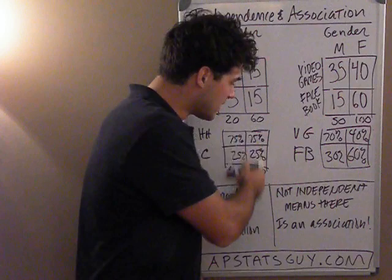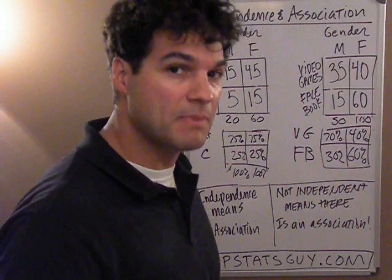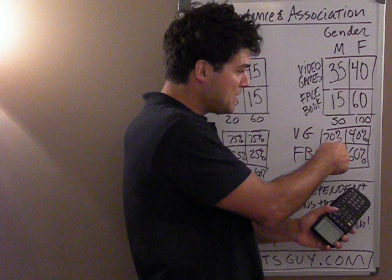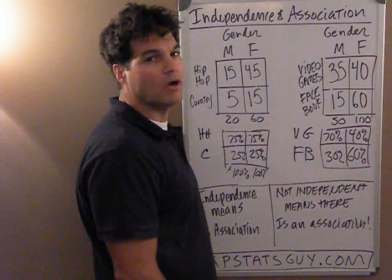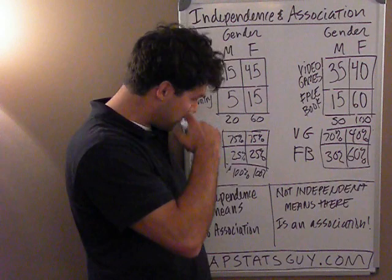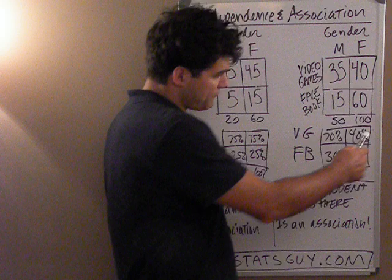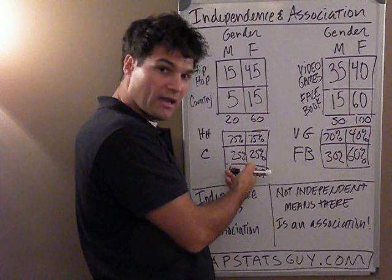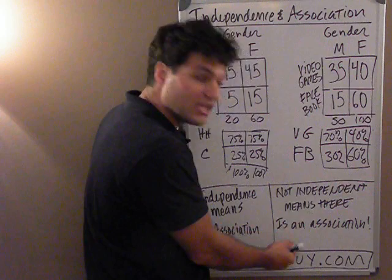When there's nothing going on, we say there's no association — it's independent. When you see some kind of pattern, like men seem more likely to play video games and women seem more likely to use Facebook, there's an association or relationship there. If you want a way to remember: if you look at the conditional percents and they're kind of the same, then they're independent. If there are differences — if they're not the same — they're not independent, because there's an association. Independence means no association; not independent means there is an association.